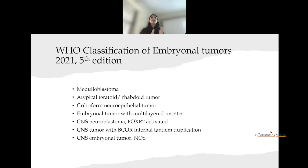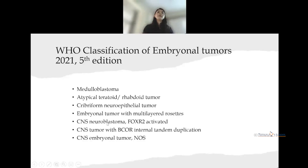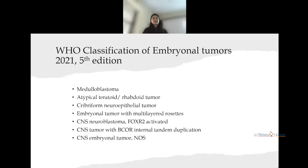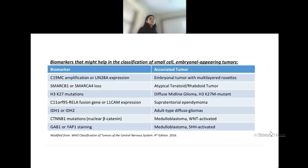Embryonal tumor with multi-layered rosettes, FOXR2-activated tumor, and neuroblastoma with neuropil rosettes and fibrillary component showing FOXR2 activation have been included. The internally tandem duplicated (ITD) tumor showed glial and neuronal features but stained negative for GFAP and synaptophysin, with only OLIG2 positivity, identifying it as a new category. Remaining unclassified tumors fall under not otherwise specified.